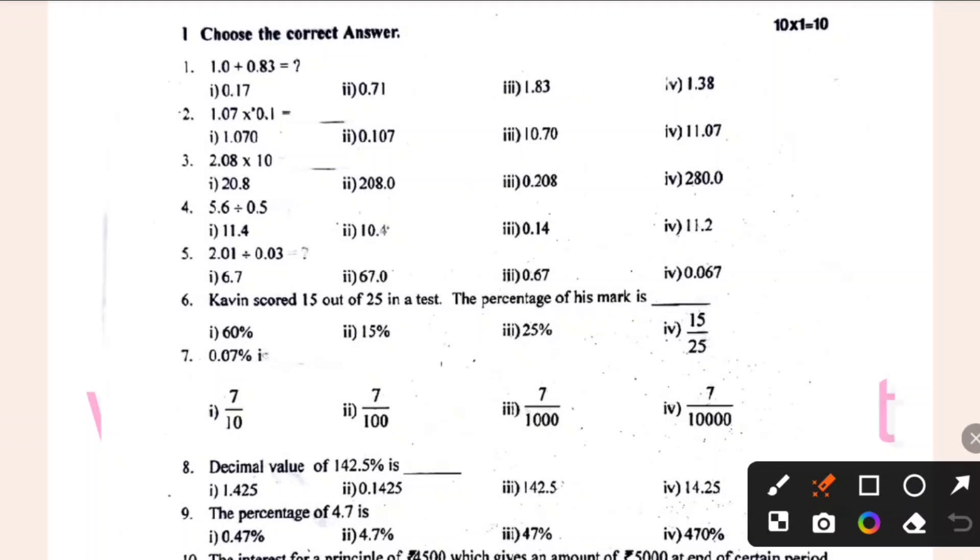Then Kevin scored 15 out of 25 in a test. The percentage. The percentage has to be taken. 15 divided by 25. You have 60 percentage.